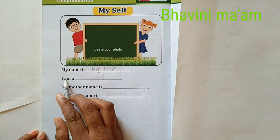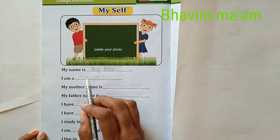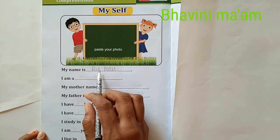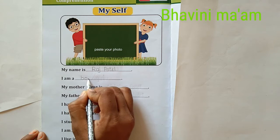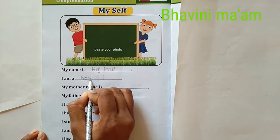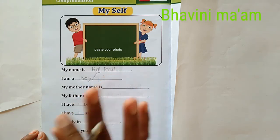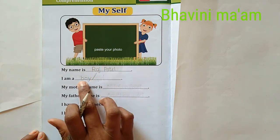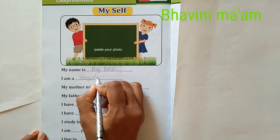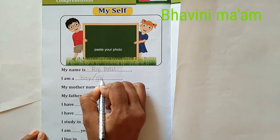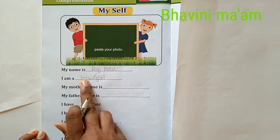Next, I am a boy or girl — that you have to write. Okay, Raj Patel means I am a boy. So here is a boy: B-O-Y, boy. If you have a girl name, you can write girl. If you have a boy, then you can write B-O-Y, boy. My name is Raj Patel. I am a boy.